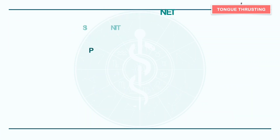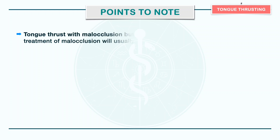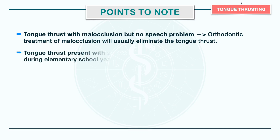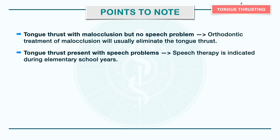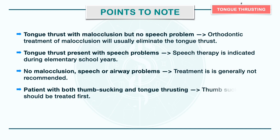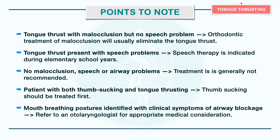Some important pointers regarding tongue thrust: In case of tongue thrust with malocclusion but no speech problem, orthodontic treatment of malocclusion will usually eliminate the tongue thrust. If tongue thrust is present with speech problems, then speech therapy is indicated during elementary school years. If there is no malocclusion, speech or airway problems, treatment is generally not recommended. If the patient has both thumb sucking and tongue thrusting, then thumb sucking should be treated first. If mouth breathing postures are identified with clinical symptoms of airway blockage, the dentist should refer the child to an otolaryngologist for appropriate medical consideration.